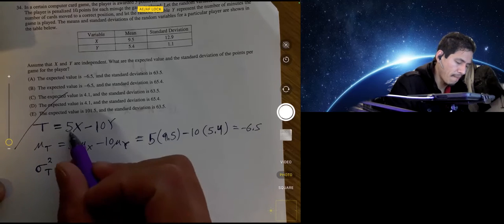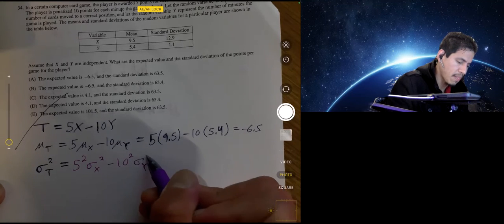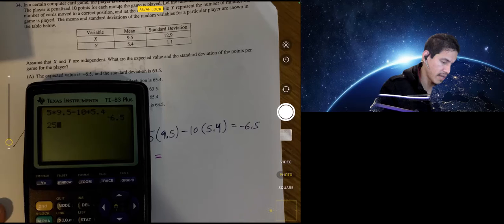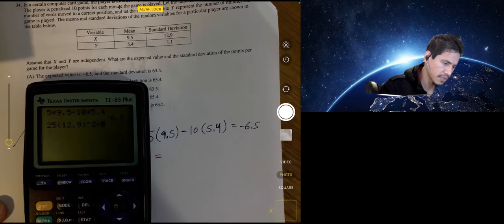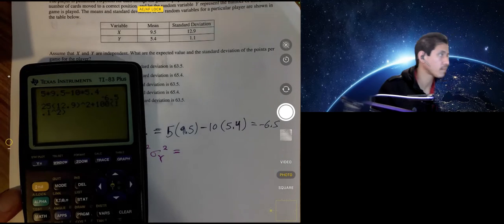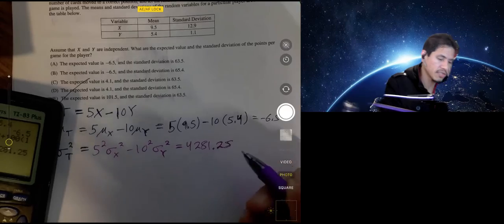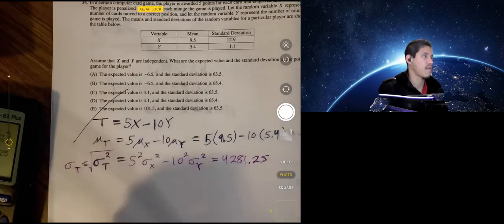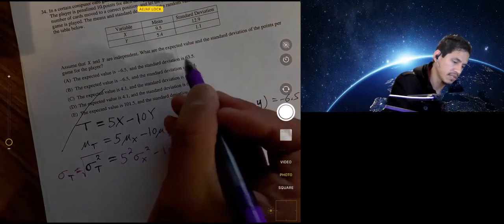But anyways, so then this would look like this. We would have 5 squared times standard deviation of X squared plus 10 squared times standard deviation of Y squared. So I'll just do this on my calculator. So we would have 5 squared times 12.9 squared plus 100 times 1.1 squared. 4,281. Now, this is variance. So to find standard deviation, you would take the square root of variance. Because standard deviation of T is the square root of the variance of T. So we take the square root of this number. That's the same as raising it to the 0.5 power. And it would be about 65.843. Oh, these are very close. The answer would be B.